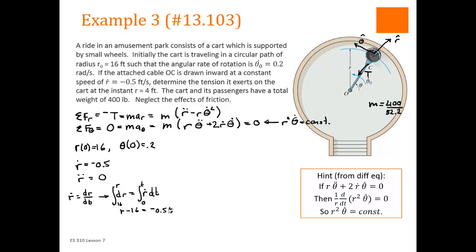So our expression for r, then, is r is equal to negative 0.5t plus 16. So at what point we're interested in? 4. At r equal to 4, t equals 24. So it took 24 seconds for the r to go from 16 to 4.